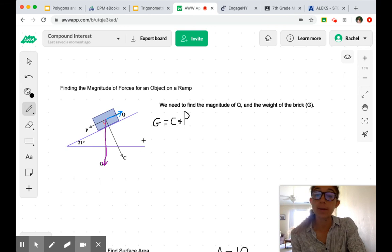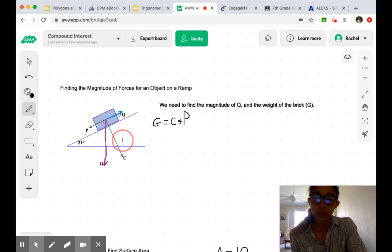One other super important bit of information that we are given is that this vector here has a magnitude of 13. So if C is equal to 13, if G is the resultant vector of C and P, we can redraw this triangle.